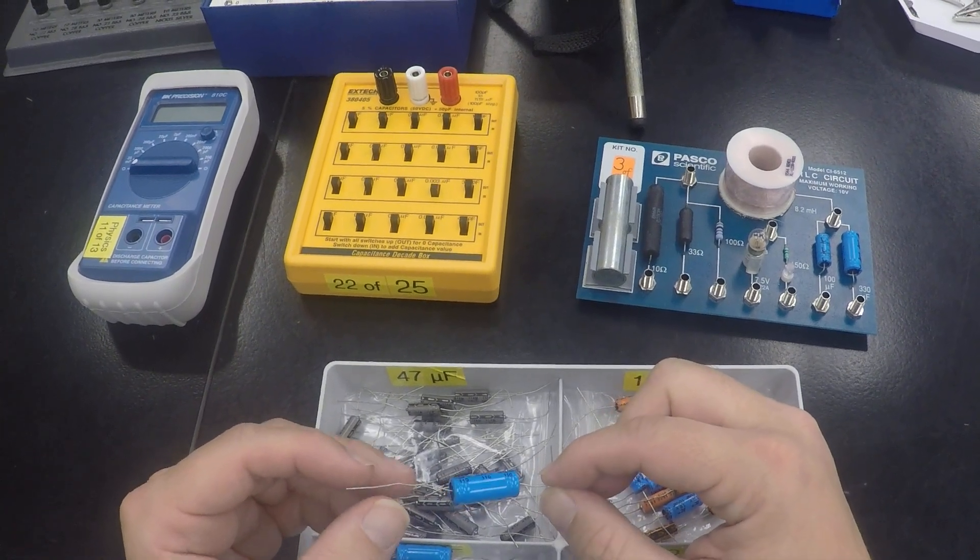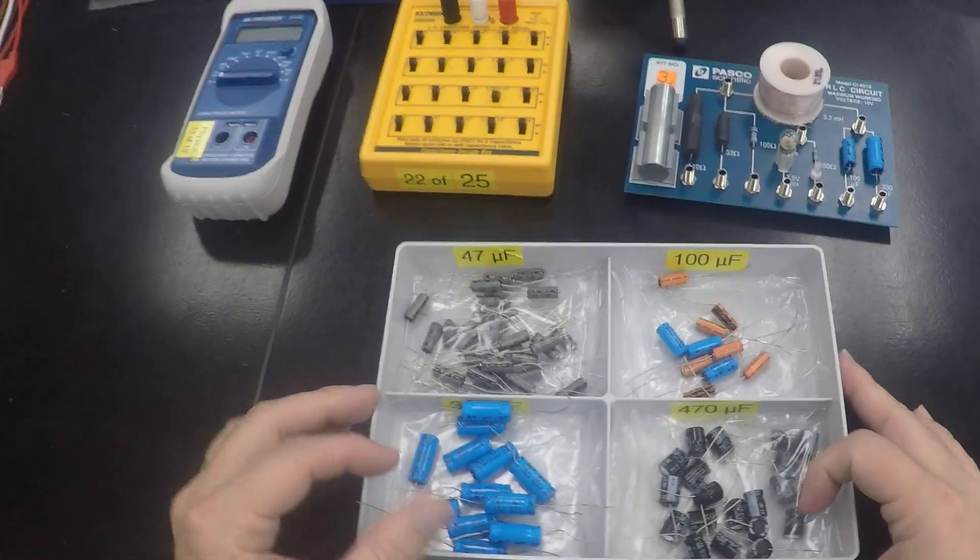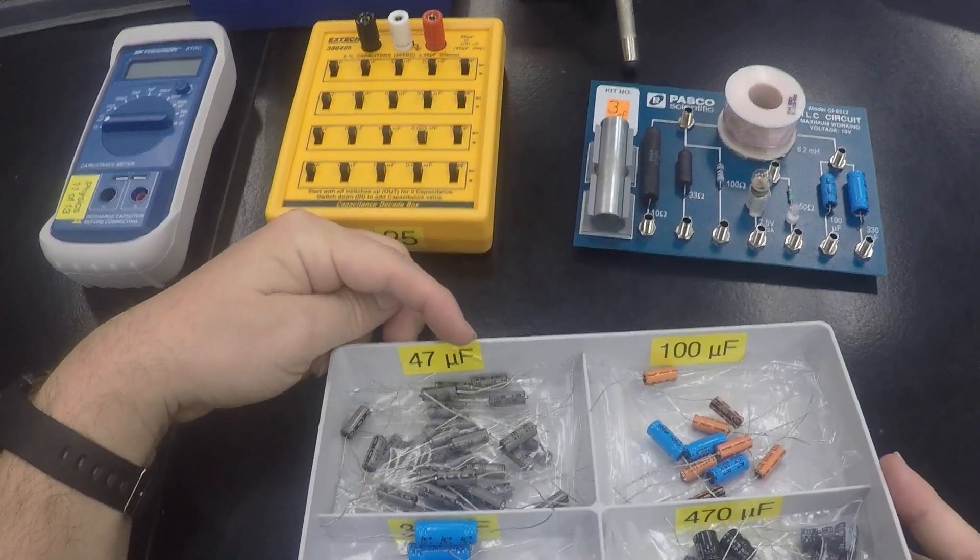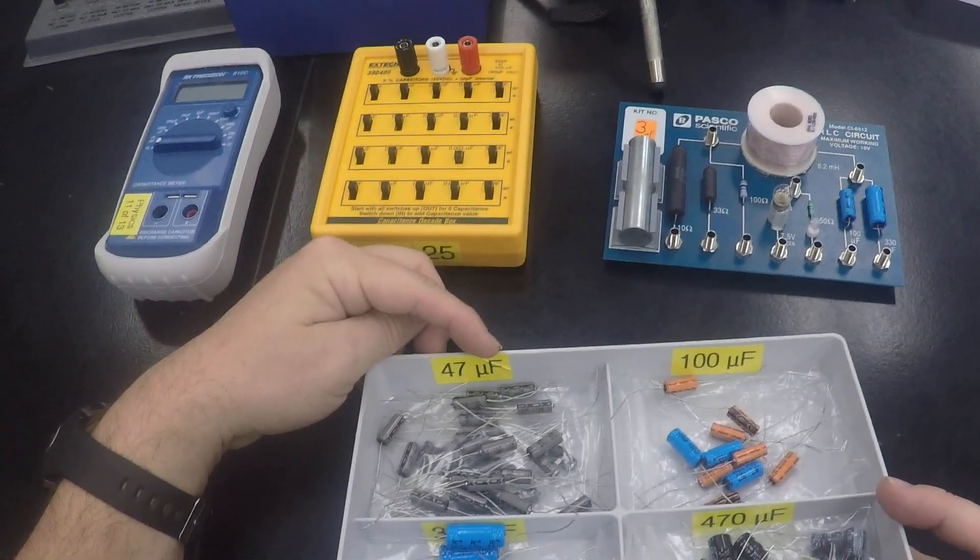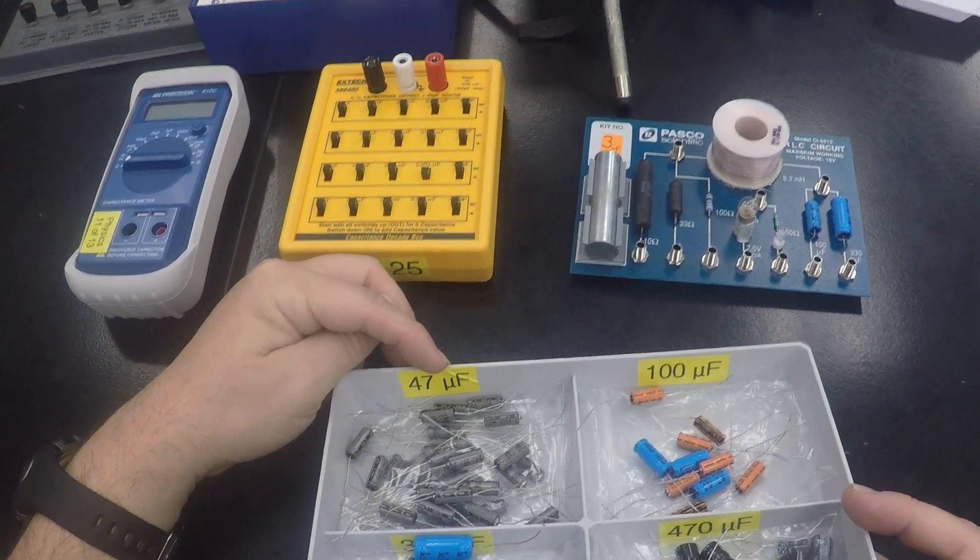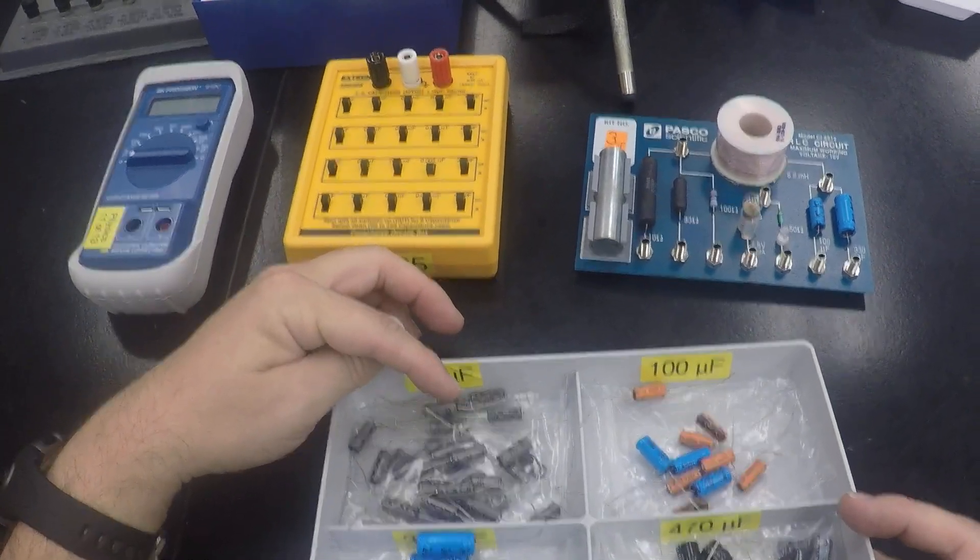And the amount of charge that a capacitor can store is rated in a very special way. You see the capital F, that stands for farad, that's the units of capacitance. And the Greek symbol mu there means micro, so these are in millionths of a farad.